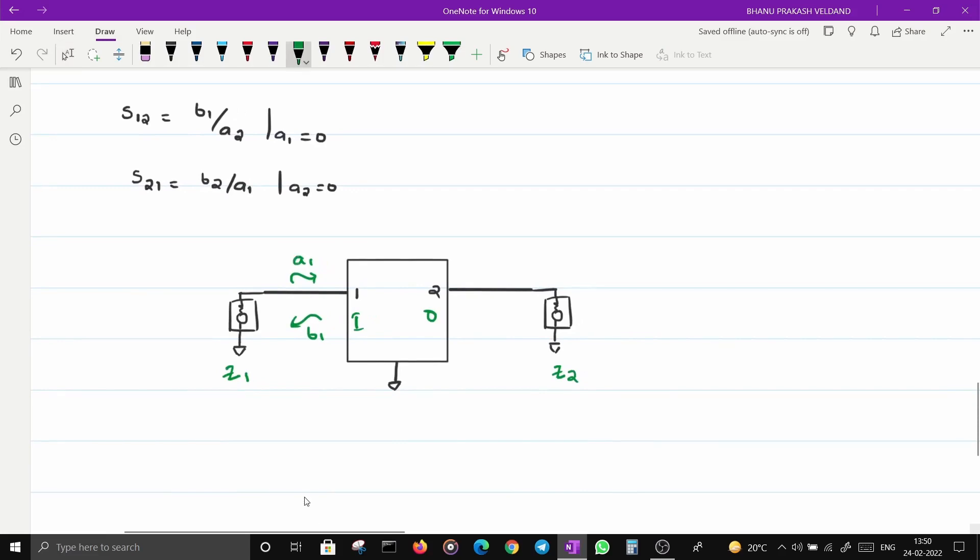Now let's understand S12 and S21. S12 is B1/A2. A2 is wave going into port two, and B1 is energy coming into port one. This is the energy going into port one because of the energy transmitted by port two.